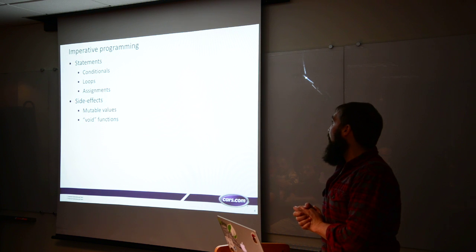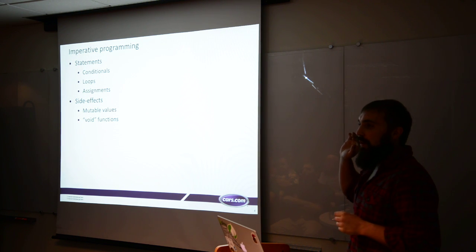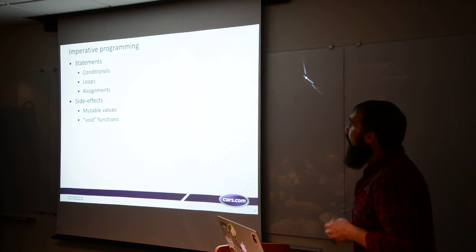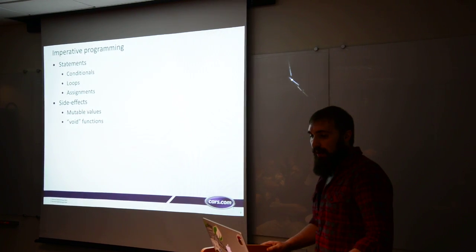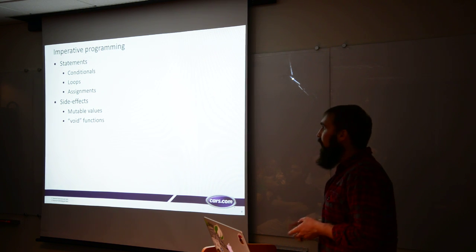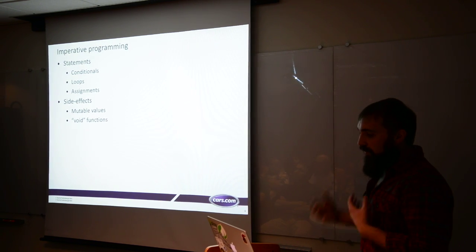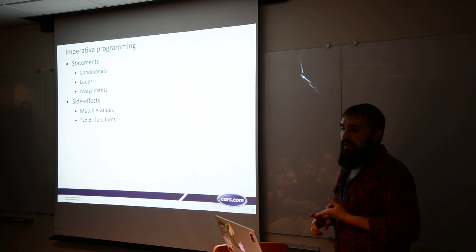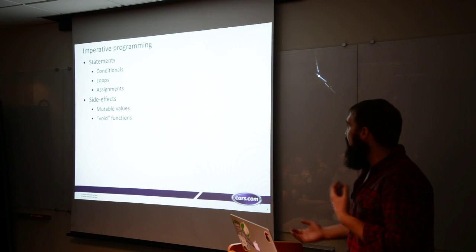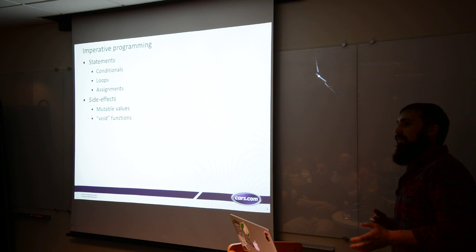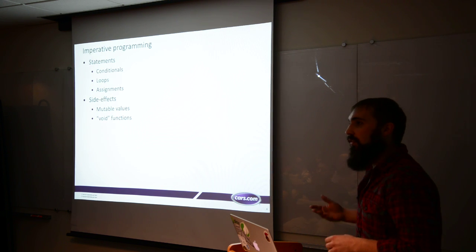So where to start? I think the best place is understanding how functional programming is different from what we probably already know — imperative programming. Imperative programming really relies on statements: conditional statements, assignments, loops. It's kind of driven by side effects. In most imperative languages, all of your values will be mutable, so you can change and edit them. And there are void functions which don't return any meaningful results, implying they're doing some sort of change to the state of the program.